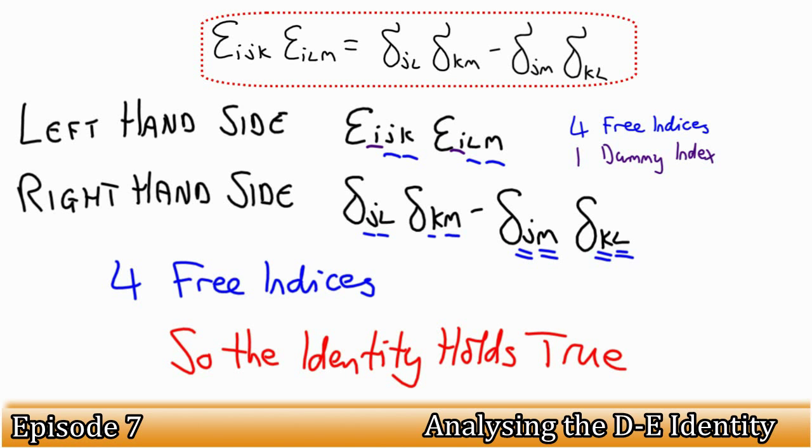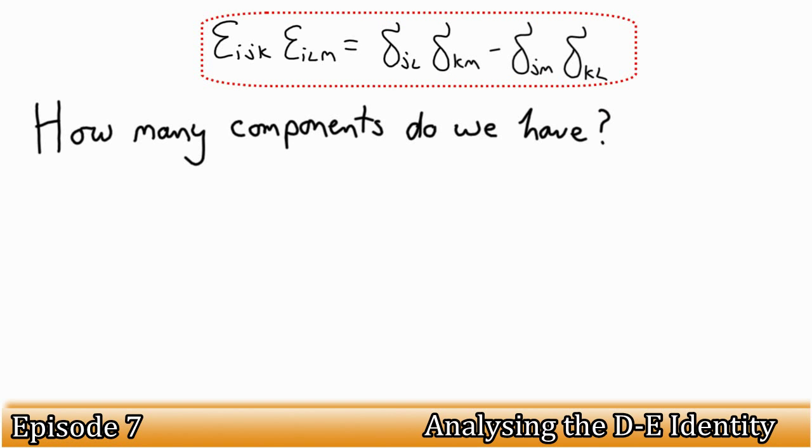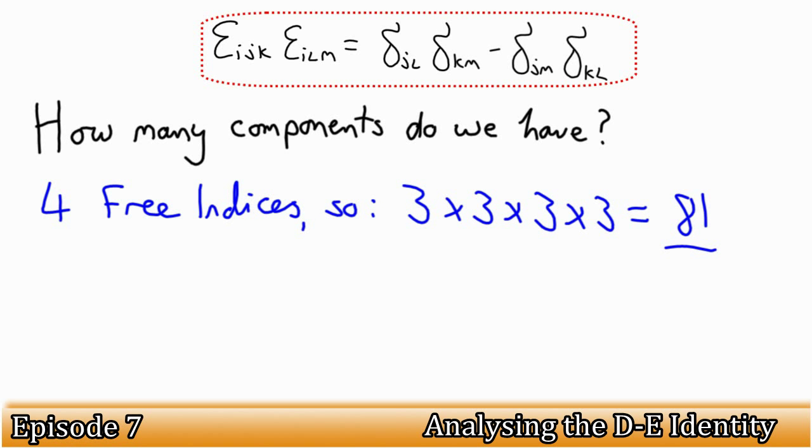Because we have four free indices, what does it say about the number of components in this equation? Well, four free indices means we have a fourth order tensor, and as each index has a dimension of 3, we have 3 times 3 times 3 times 3, which is equal to 81 components.